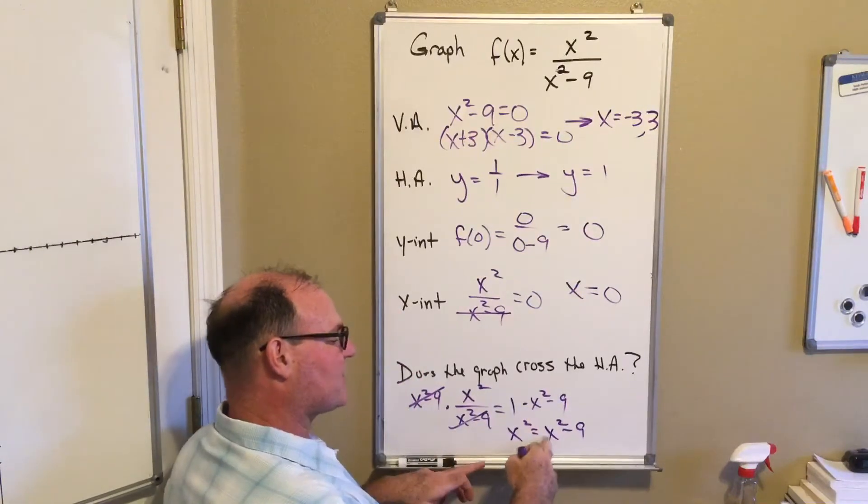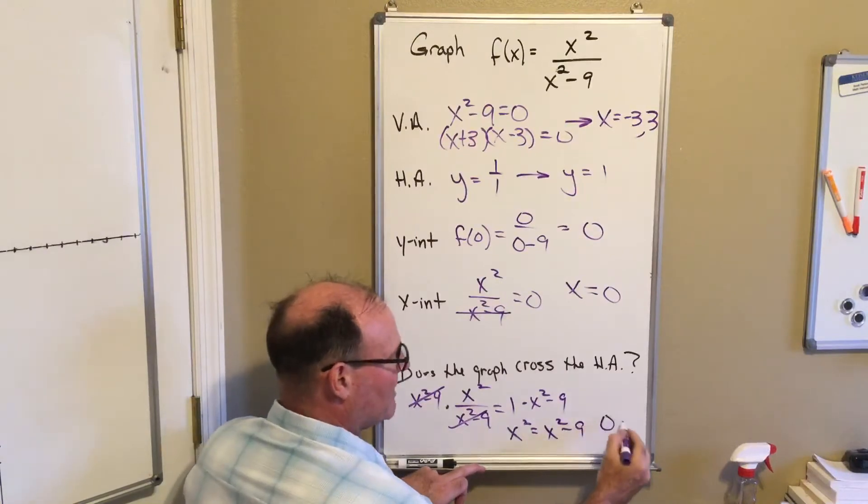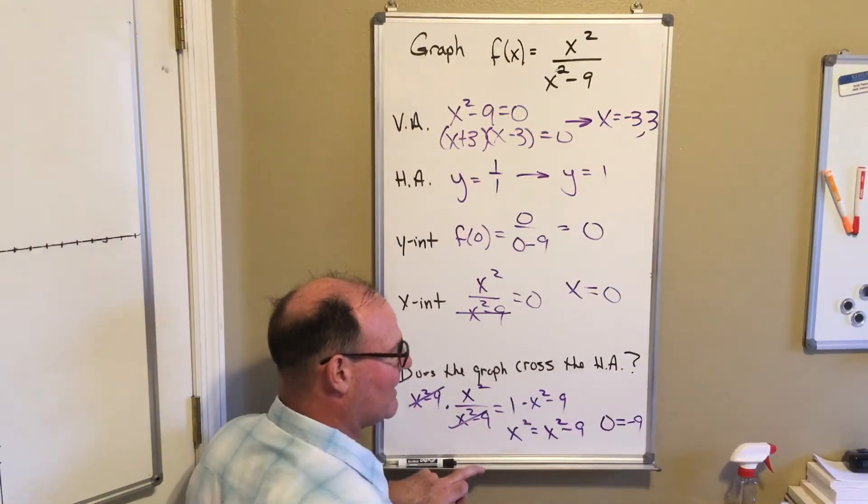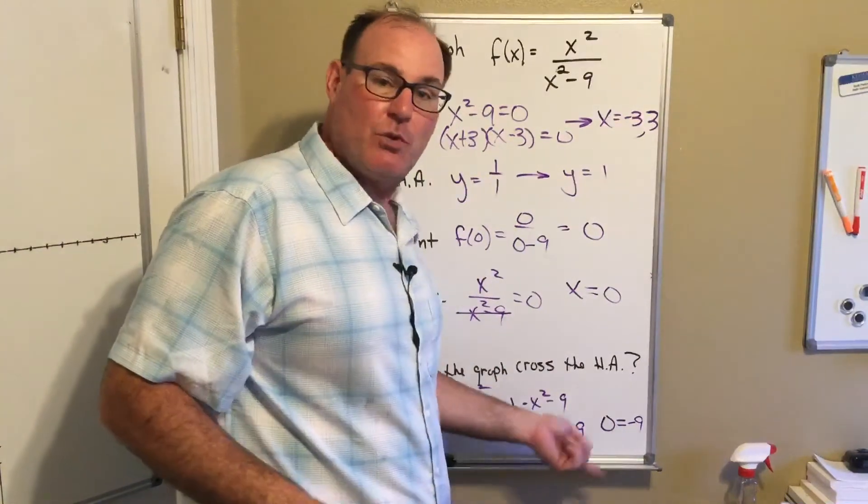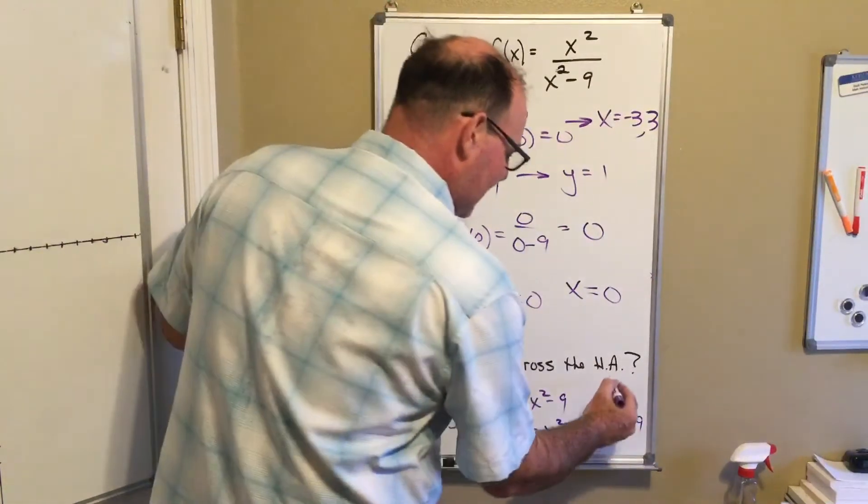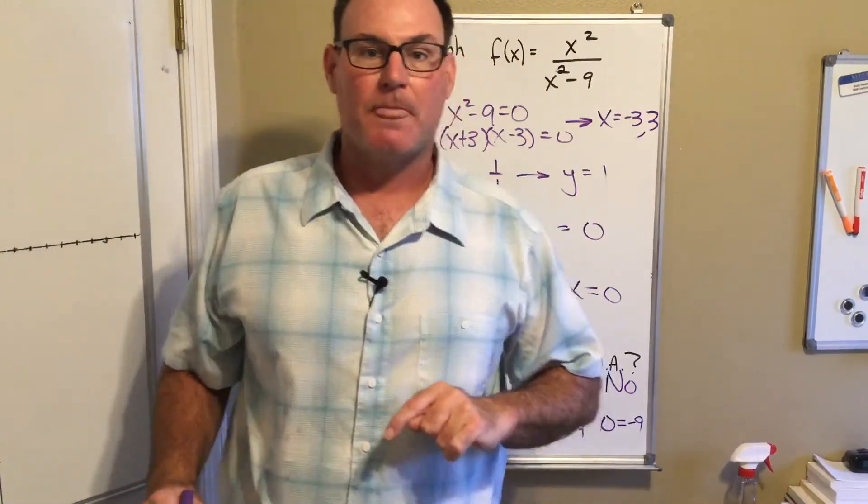And then one times x squared minus nine on the right. As we've seen in other problems, when I go to bring the x squared all on the same side, they're going to cancel and I'm going to get the equation zero equals negative nine. That is a contradiction.